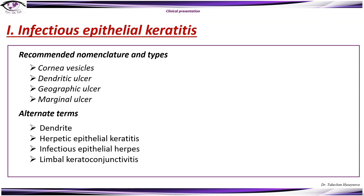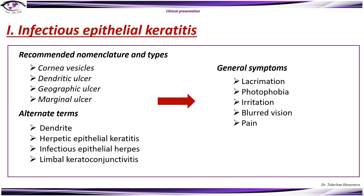Let's start with infectious epithelial keratitis. The classification of this type is based on clinical presentation with corneal vesicles, dendritic, geographic, and marginal ulcers. General symptoms include lacrimation, photophobia, irritation, blurred vision, and pain — basically the most common corneal syndrome symptoms.